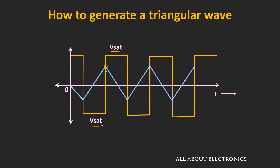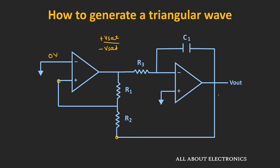Once again, when the integrator reaches some finite threshold voltage, you will see a transition from the negative saturation voltage back to the positive saturation voltage. So the output of the integrator decides the transition point for the Schmitt Trigger. For this Schmitt Trigger, there are two inputs at the non-inverting end: one is the output of the Schmitt Trigger itself — either positive or negative saturation voltage — and the other is the output from the integrator circuit.